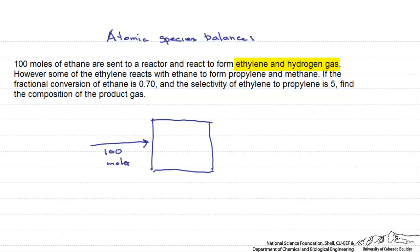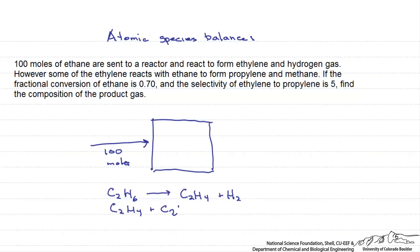So let's write out that reaction. We have ethane, C2H6, and that goes to ethylene, C2H4, plus hydrogen gas, H2. However, some of the ethylene, C2H4, reacts with ethane, C2H6, and it forms propylene, C3H6, and methane, CH4.